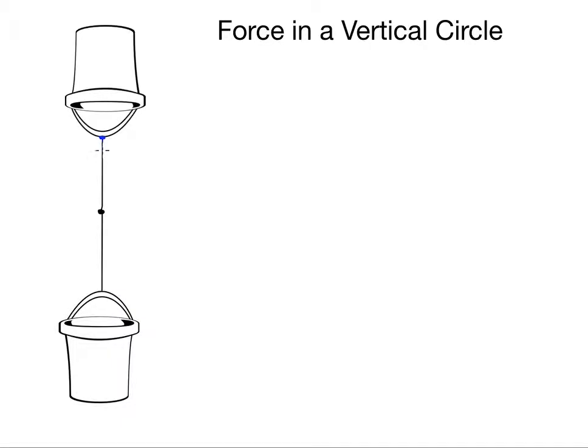Now the first force is the rope toward the centre of the circle, that's the tension in the rope. And the second force there, I'm going to draw it just to the side just to make it a bit clearer, that force will be the weight of the bucket given by mg.